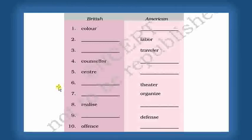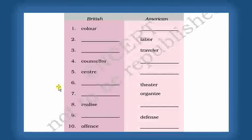The next word is Centre: C-E-N-T-R-E is British English. In American English you write it as C-E-N-T-E-R. Then Theatre: in American English it is T-H-E-A-T-E-R, but in British English it is T-H-E-A-T-R-E.